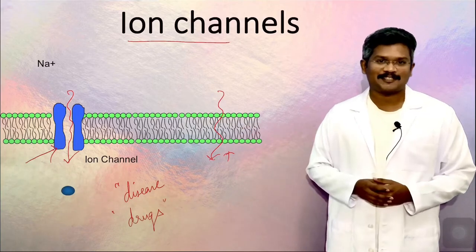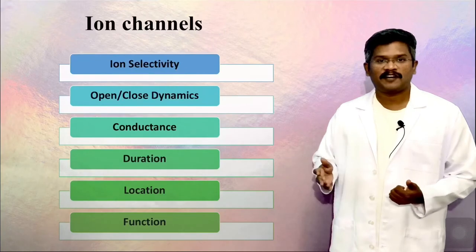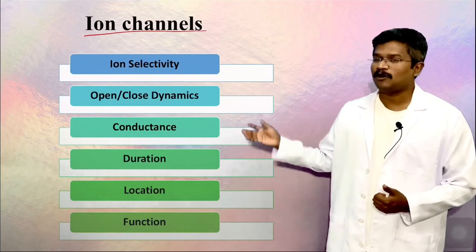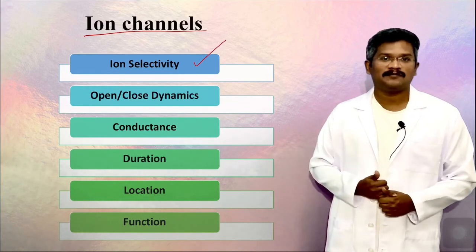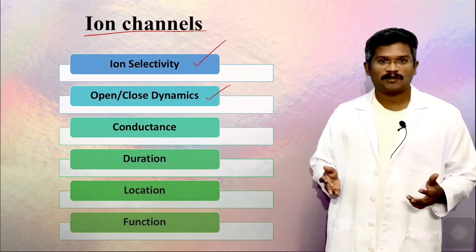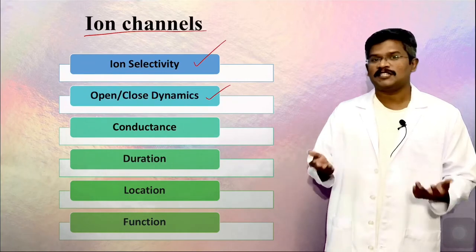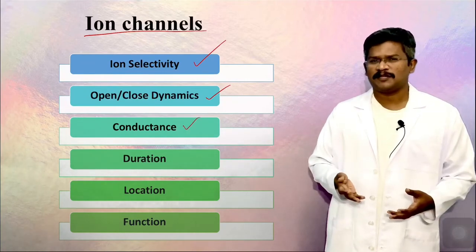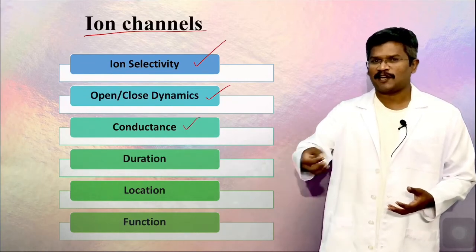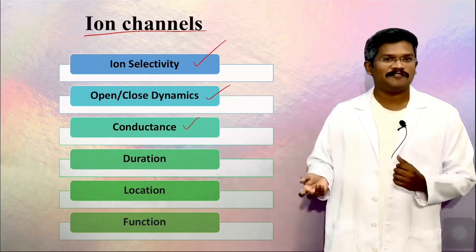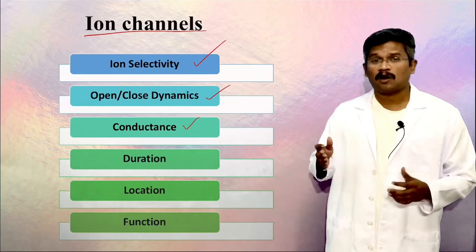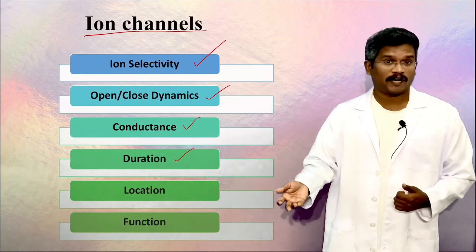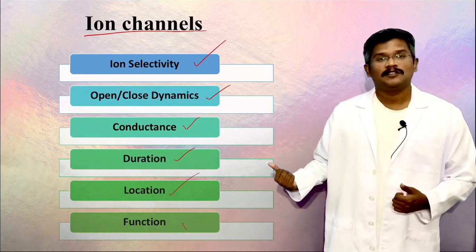There are hundreds of different ion channels in the human body. We classify them according to these properties: which ion passes through them, what causes them to open or close, and their conductance, which is a measure of the ease with which the ion moves through the channel, the inverse of resistance. We also classify them based on how long they are open, where they're located, and their functions.